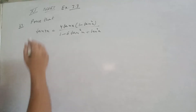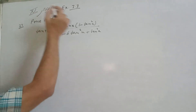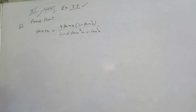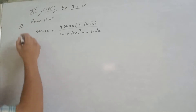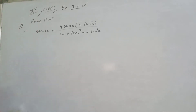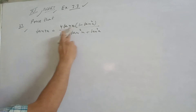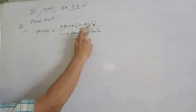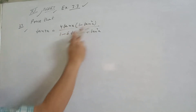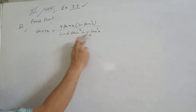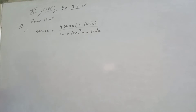Hello guys, today we are going to take a look at NCERT exercise 3.3. We will prove that tan 4x is equal to 4 tan x into 1 minus tan square x upon 1 minus 6 tan square x plus tan power 4x. We will prove this.